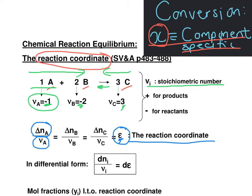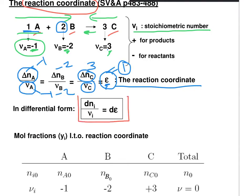Consider an example. If one mole of A reacts, delta N of A is minus 1 divided by minus 1, so the extent of the reaction equals 1. This must be the same for component B: if one mole of A reacts, two moles of B are used, so delta N is minus 2 divided by its stoichiometric number minus 2. Three moles of C form: delta N is 3 divided by its stoichiometric number 3, and again the reaction coordinate equals 1. In differential form, we can express this as d-epsilon equal to d-N of each component divided by its stoichiometric number.